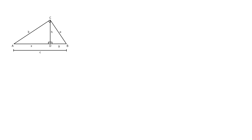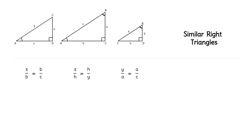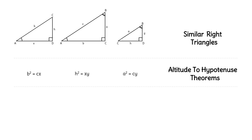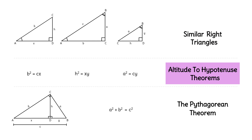By constructing an altitude to the hypotenuse in a right triangle, we proved three similar right triangles. From there we wrote some proportions and proved three altitude to hypotenuse theorems. Then we used addition and substitution to prove A squared plus B squared equals C squared. Similar triangles, altitude to hypotenuse theorems, and the Pythagorean theorem are powerful tools you can use to solve problems.